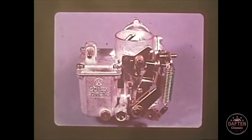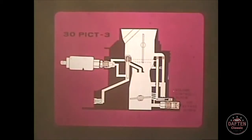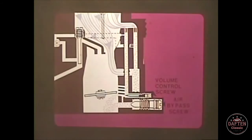The 30 PICT-3 carburetor, which was introduced on the 1970 models, has some significant changes. Remember how we controlled idle speed by opening the throttle valve in the other carburetors? Well, in the 30 PICT-3, the throttle is always closed during idle. Idle air now bypasses the throttle valve and is controlled by the air bypass screw. Unscrewing it opens this passage, allowing more air to the engine.